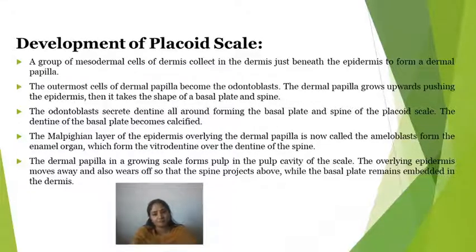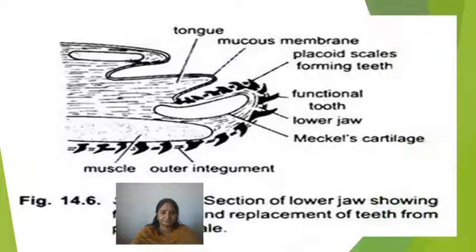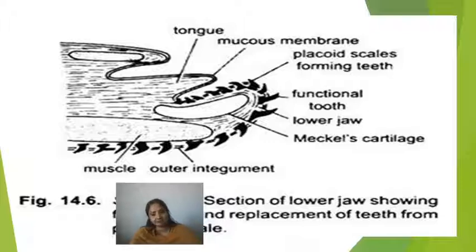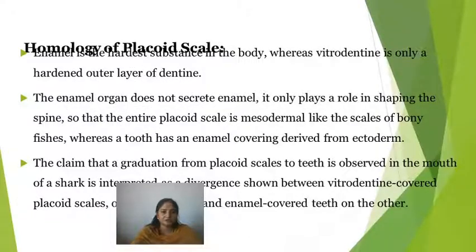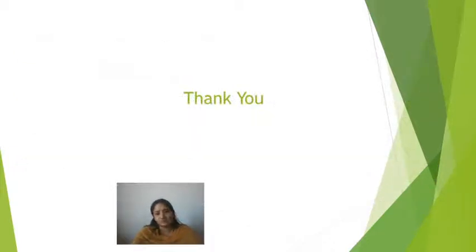This process is similar to how teeth emerge — as the teeth are present in the gums and then come out, the process is similar to the cutting of teeth. The Placoid scale is embedded in the dermis with the spine growing through the epidermis. In lower jaws of Elasmobranch fishes, the Placoid scales are modified to perform the function of teeth. This covers the homology of Placoid scales, as we have seen. I think we have covered all the aspects related to Placoid scales and their development.